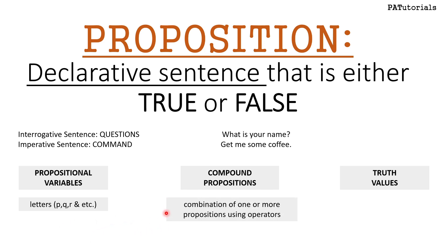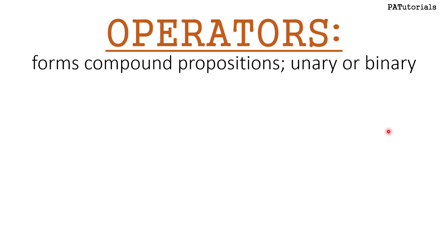Compound propositions are combinations of one or more propositions using operators, which we'll discuss shortly. Truth values are either true or false — we have two values, and they can be represented by one or zero.